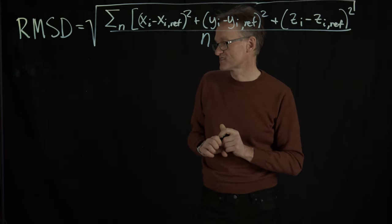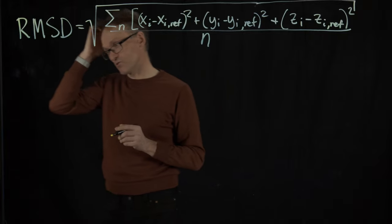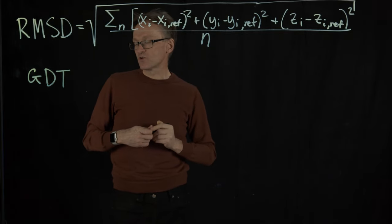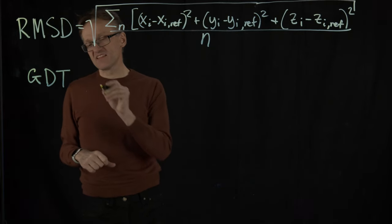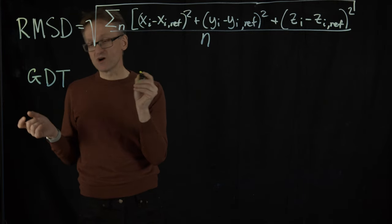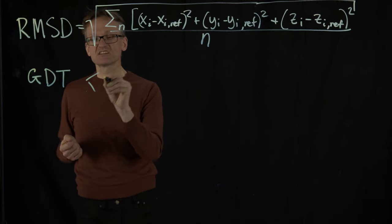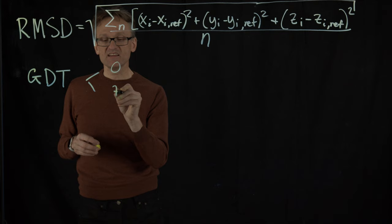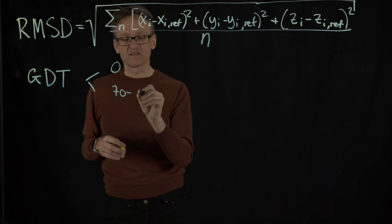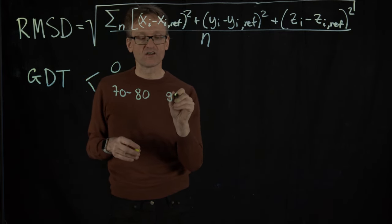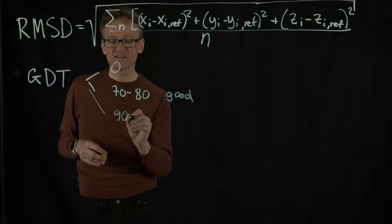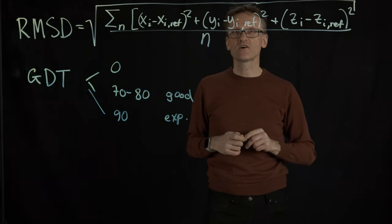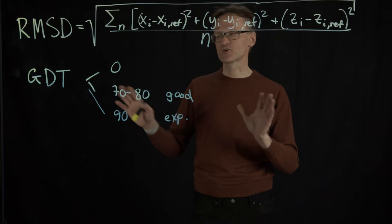There are a few other ways that we can measure scores that I won't define, but there's one called GDT, Global Distance Test, that goes from zero to a hundred. I would say that at zero we don't have any similarity at all. 70-80 is really good, and at 90 that would be an experimental structure. So if two structures have a GDT of 90, that means that they're basically experimental. That's as good as it gets.